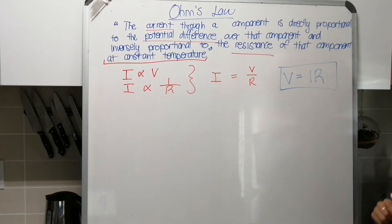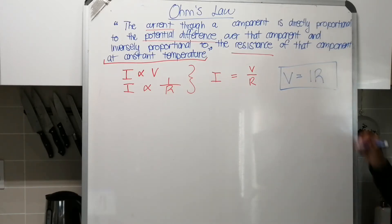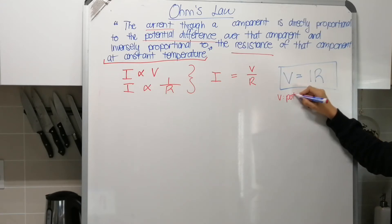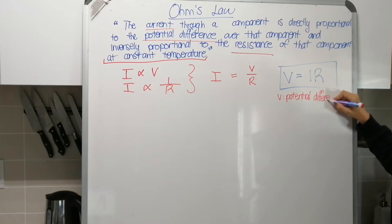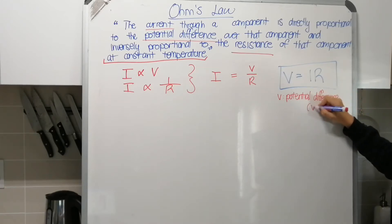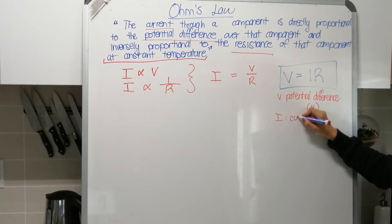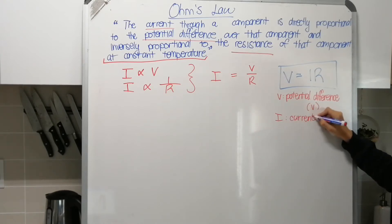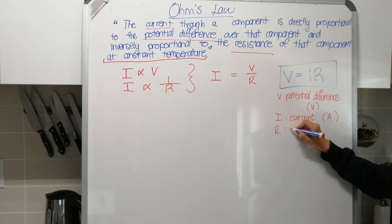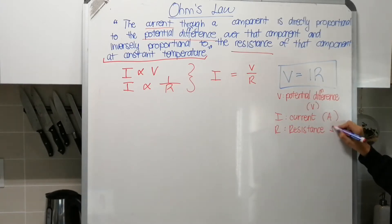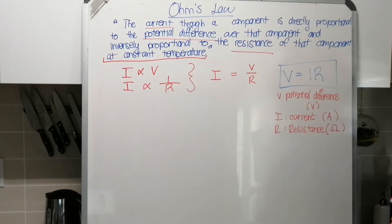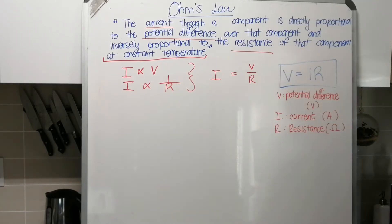Where V is potential difference - you've seen these already, what the symbols are and what the units are, but let's just repeat it. V is potential difference and that is measured in volts. I is the current and this is measured in amps. R is the resistance and this is measured in Ohms, which looks kind of like an upside-down horseshoe - a Greek letter, Omega. So that is Ohm's Law.